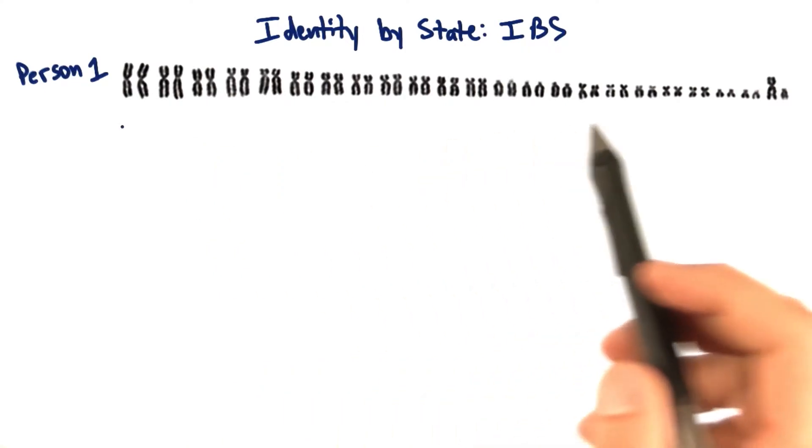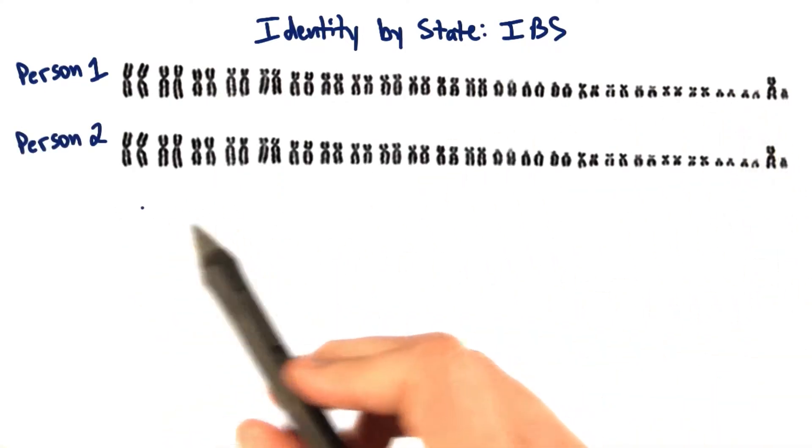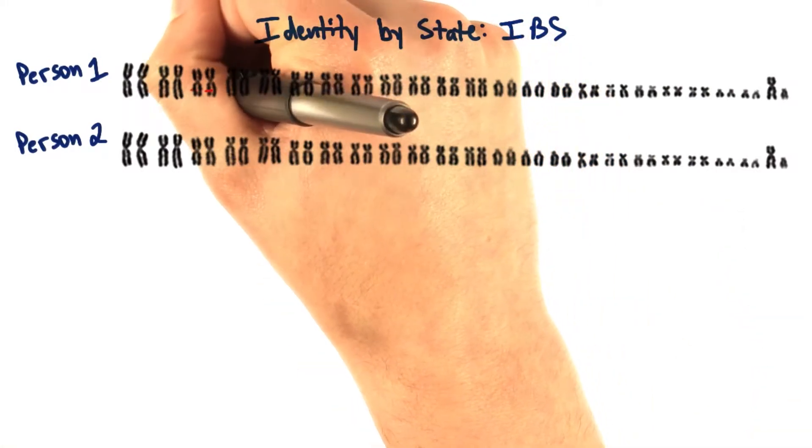And we can go SNV by SNV and match them to the SNVs that we find in the genome of person 2. For example, let's say we look at an SNV on chromosome 3.